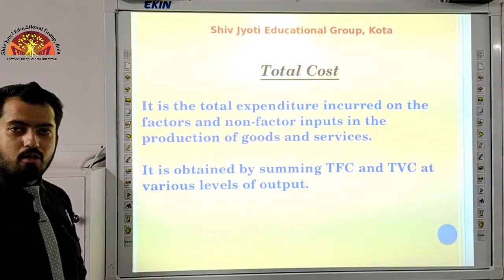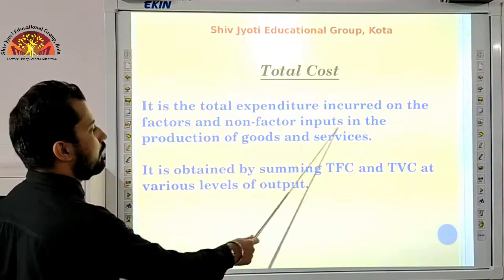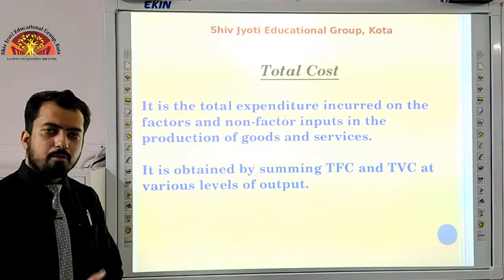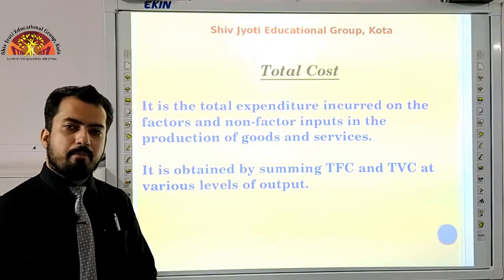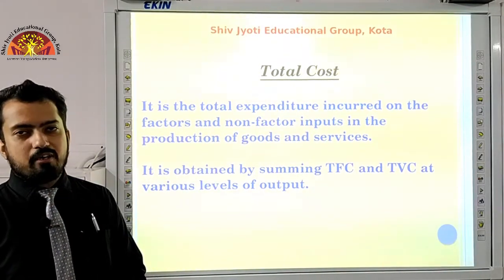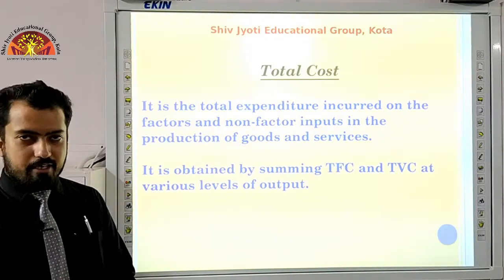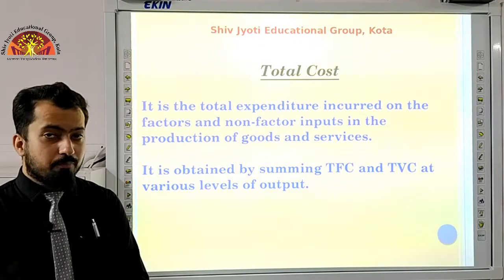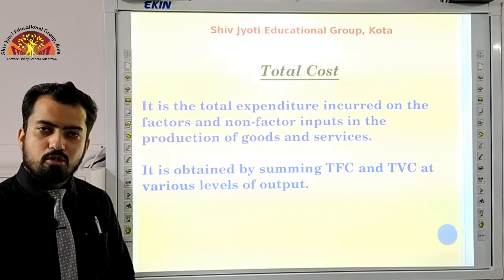Next is total cost. It is the total expenditure incurred on fixed and variable factor inputs in the production of goods and services. In simple terms, production requires fixed and variable factors. Expenditure on fixed factors is fixed cost; expenditure on variable factors is variable cost. When we add both costs together, we get total cost. Therefore: TC = TFC + TVC.